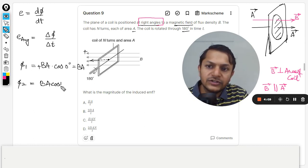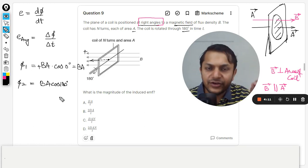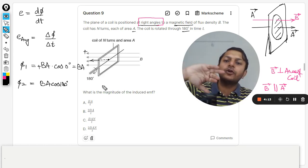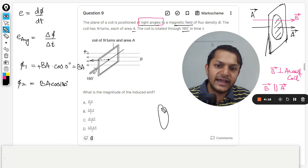Now let us go for phi 2. Now what is phi 2? It will be B A cos 180 degrees.